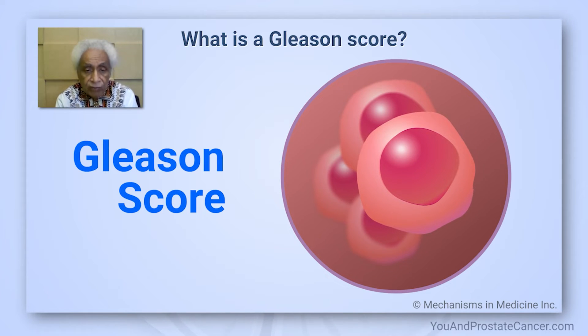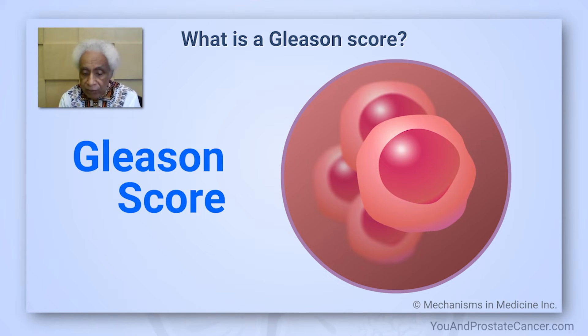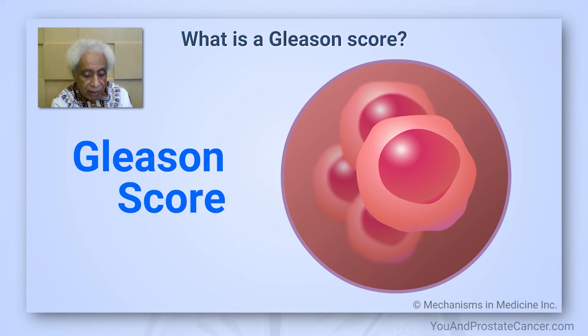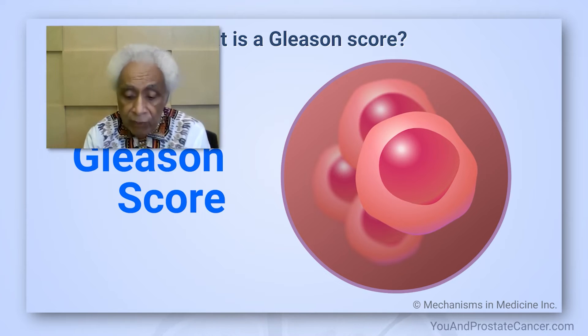Tumors are often mixed in cell type. You may find one part of the tumor has one Gleason grade and another part has another. So they'll look at two numbers: the most predominant pattern and the next most predominant. One area may be a Gleason three and another may be a Gleason four, and they'll add those two numbers together to determine the Gleason score, which in this case is seven.